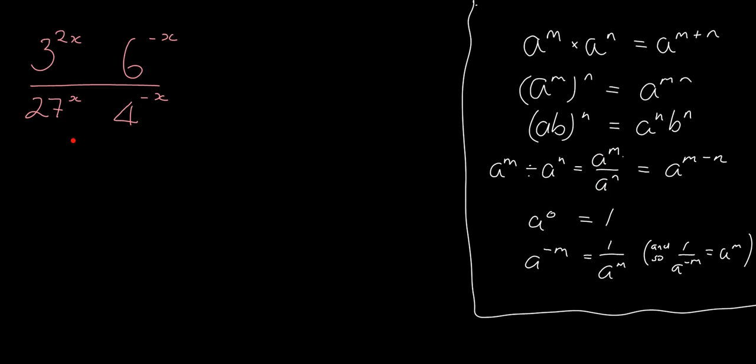So if we're faced with a question like this one where we've got a 3 and a 6 and a 27 and a 4, we actually can't progress here because we've got different bases. So we can't apply these rules of multiplying together or dividing.